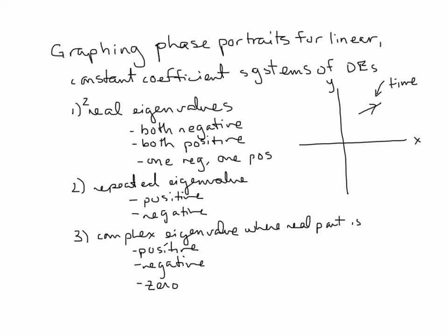This video is going to go over graphing phase portraits for linear constant coefficient systems of differential equations. The system has an x and y component in vector form. When we draw the phase portrait, x is on the horizontal axis and y on the vertical. For each different solution trajectory, we have an arrow that represents the time variable.